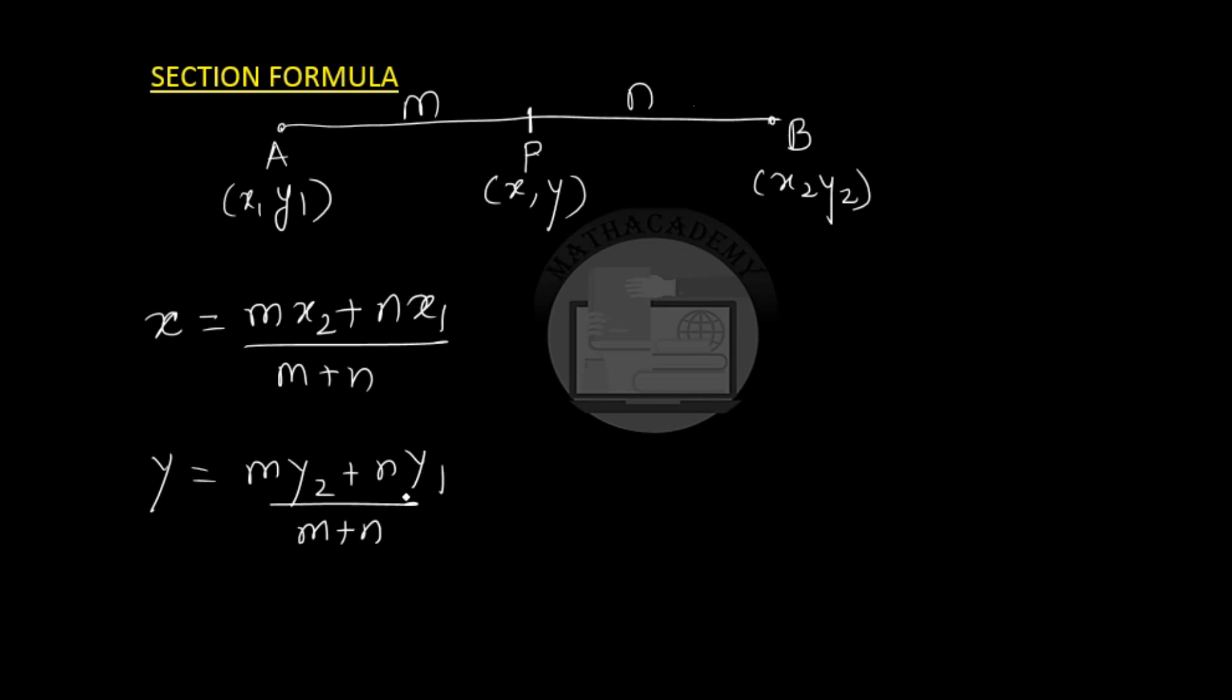Now let us try to derive this formula. So let us draw the coordinate axis. We have point A and point B with coordinates x1, y1 and x2, y2. There is a point P with coordinates x, y, and it divides the line in the ratio m is to n.